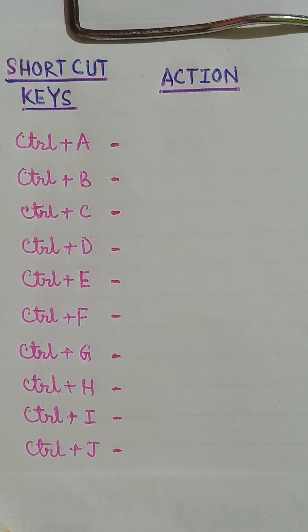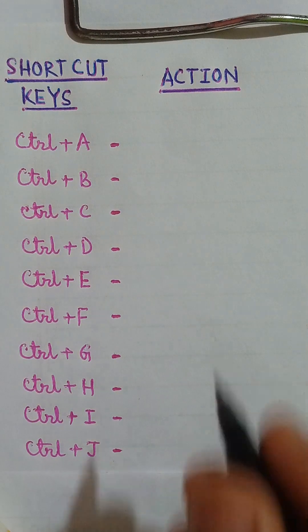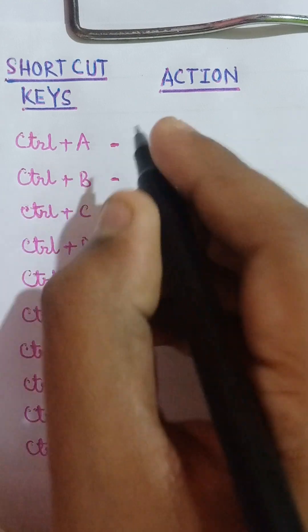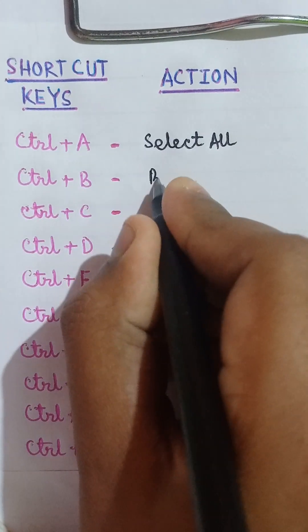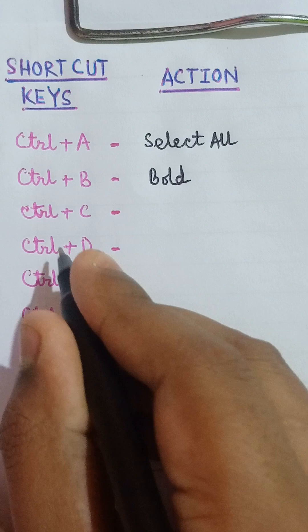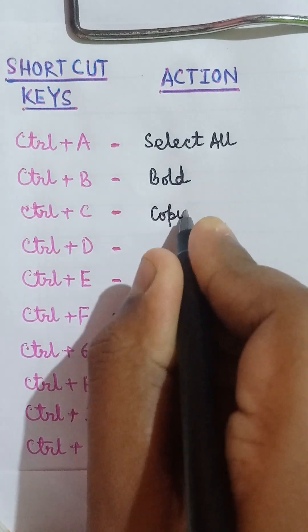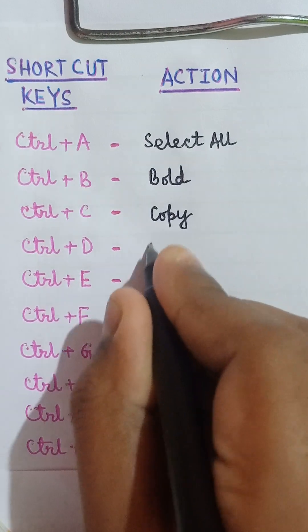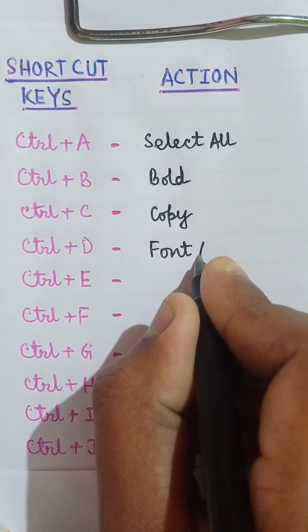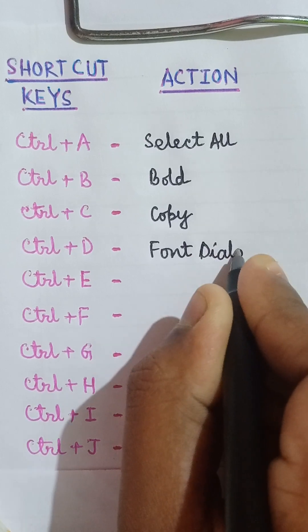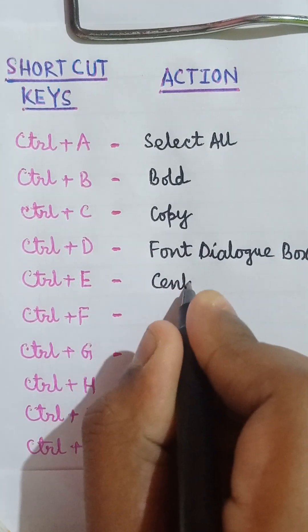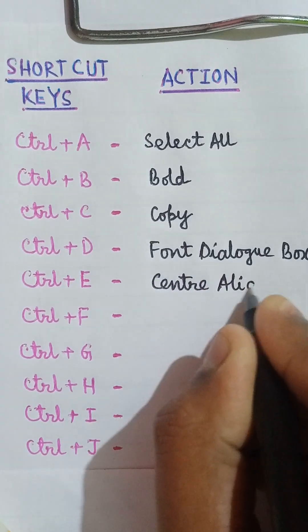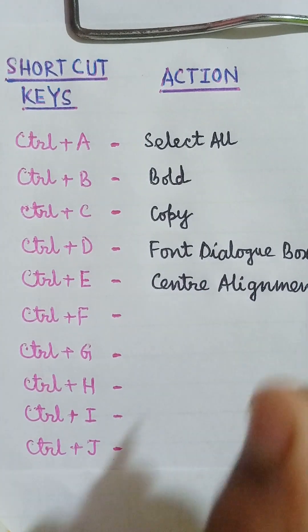Hello friends, welcome to my channel. Today we are going to discuss some important shortcut keys. Let's begin. Ctrl+A select all, Ctrl+B bold, Ctrl+C copy, Ctrl+D font dialog box, Ctrl+E center alignment, Ctrl+F find.